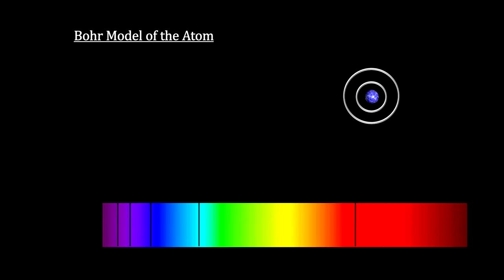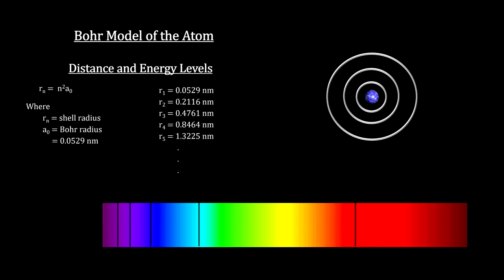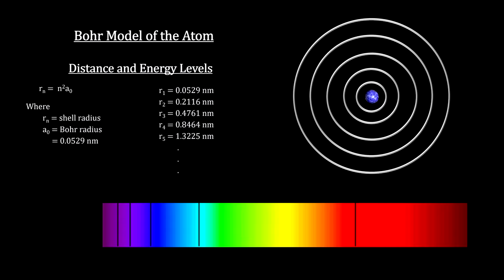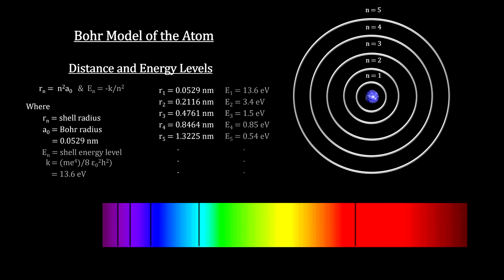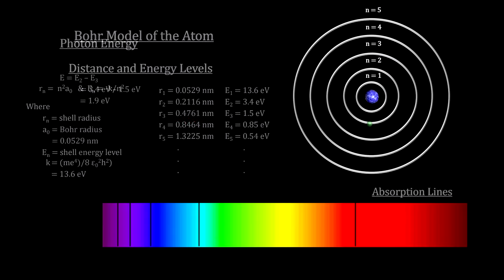His model still had the electrons orbiting the nucleus, but they could only orbit at certain specific distances from the nucleus called shells. Each shell had its own unique energy level, n, where n was a positive integer equal to 1, 2, 3, etc. These were called the atom's quantum numbers.